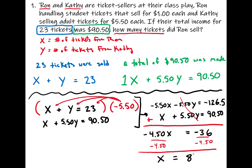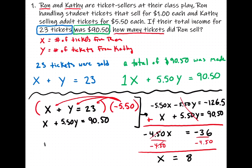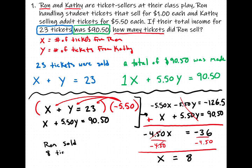Negative 36 divided by negative 4.50 is positive 8, so x = 8. Ron sold 8 tickets.